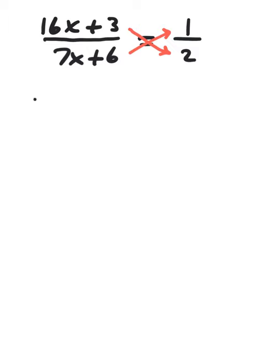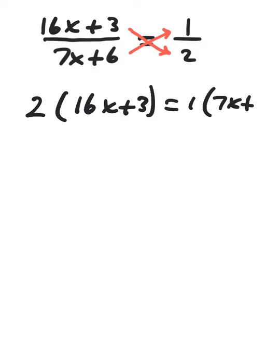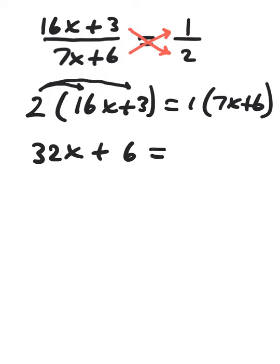You multiply your terms diagonally and set them equal to one another. Now, this only works when you have two fractions set equal. We have parentheses because the left fraction has two terms and we have to collect those in parentheses. But we've seen in previous examples how to clear parentheses. 2 times 16x plus 2 times 3, that's equal to 1 times 7x plus 1 times 6.